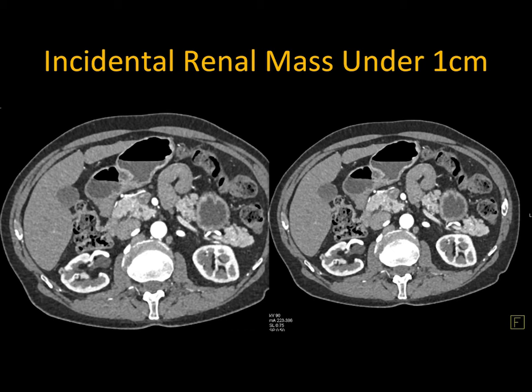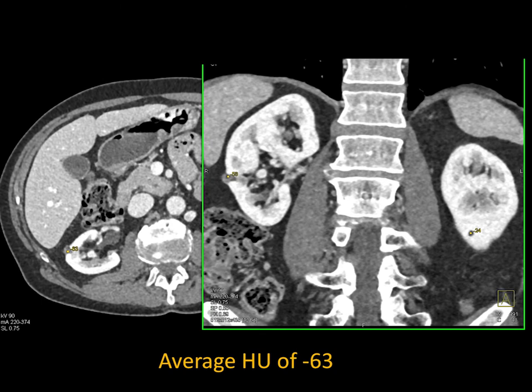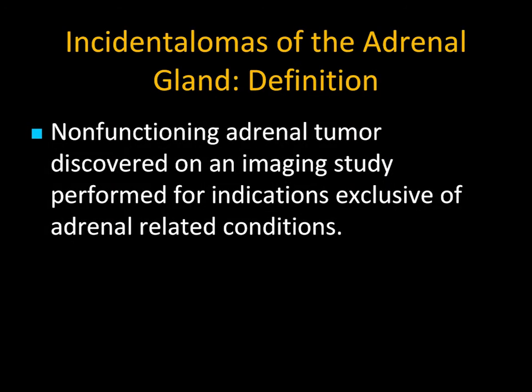Similarly, there's a lesion in the right kidney, under 1cm. New guidelines basically say under 1cm, simply follow — don't do anything. But if you look carefully, this lesion has a lower-density center, and a cursor there reads minus 63 Hounsfield units. That's fat. This is a small angiomyolipoma.